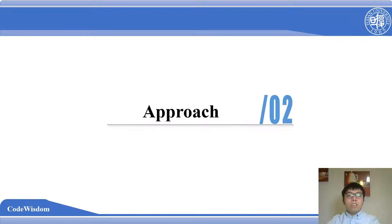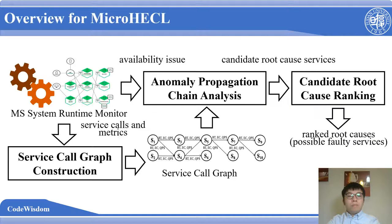In the second part, I will introduce the detail of our approach. As shown in the picture, this is the overview of MicroHackle. When the runtime monitor detects an availability issue, MicroHackle starts a root cause analysis process. It constructs a service call graph of the target microservice system based on the service calls and metrics. Then we will analyze possible anomaly propagation chains from the initial anomaly service and identify a set of candidate root cause services. Finally, we rank the candidate root cause services based on the possibility of causing the given availability issue.